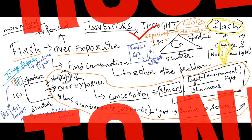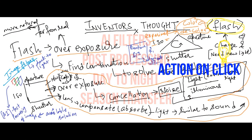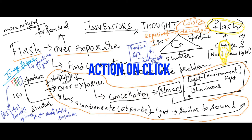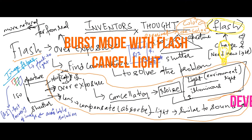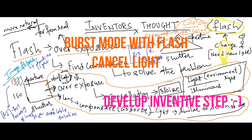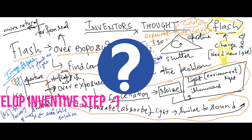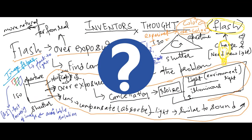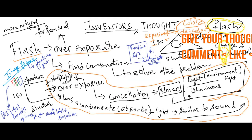AI filters can make an image go from dark to bright, but we need a run-time solution. What about taking multiple photos in burst mode and cancelling out light for getting an underexposed photo? What do you think? Please comment if you find any solution.